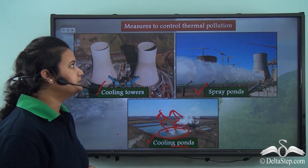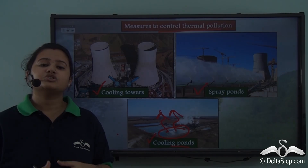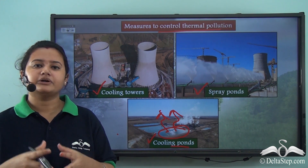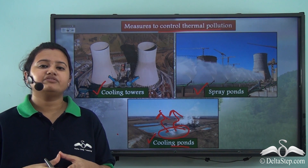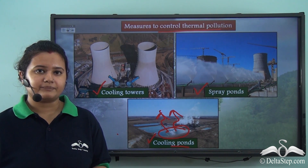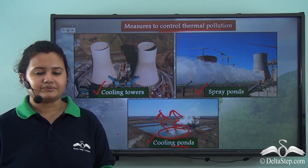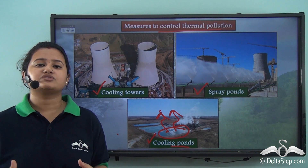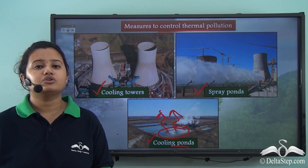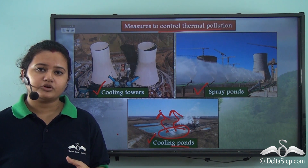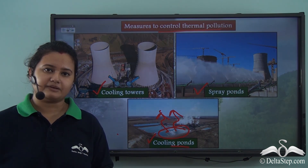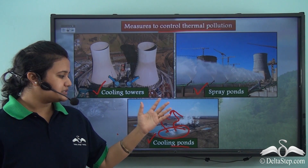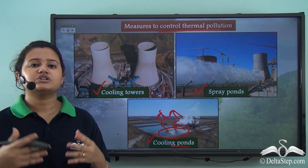In today's video, we first understood that water used as a coolant in industries leads to thermal pollution. We learnt that thermal pollution refers to a rapid increase in the temperature of water bodies, which is unfavorable for the entire environment. We also learnt about its effects — including eutrophication, decreased oxygen availability, and massive death of fishes — and different ways to control thermal pollution: installing cooling towers, spray ponds, and cooling ponds. In our next video, we will discuss other types of pollution.